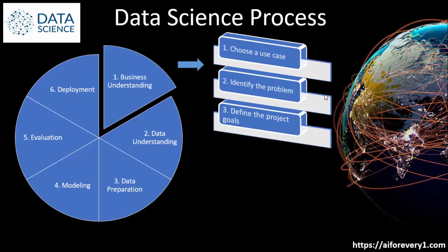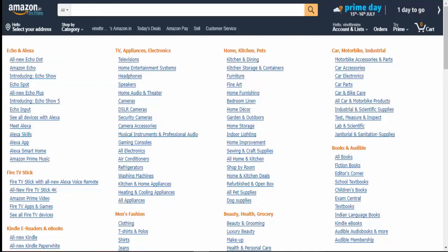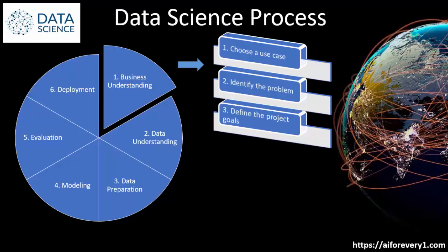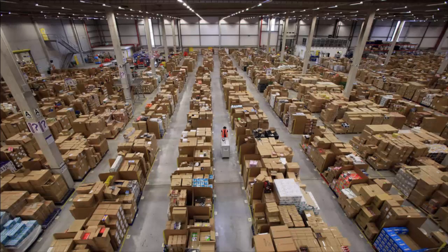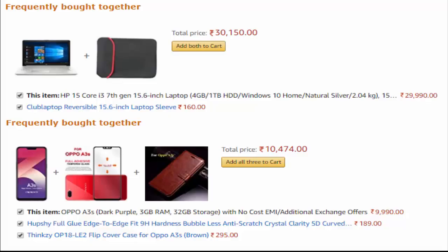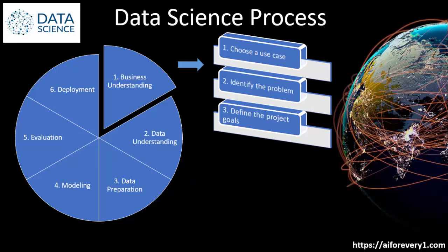We are the data scientists going to Amazon company for product analysis. You know they are an online e-commerce company that sells many products. The first step in business understanding is choosing a use case — that is, business defines their objectives and their problem. In simple words, what is their problem and what they expect us to solve. Together the data science team and company stakeholders set the goals, targets, and scope of the project. For example, product stock management and product recommendations are a few examples of use cases.